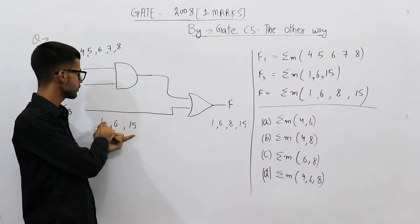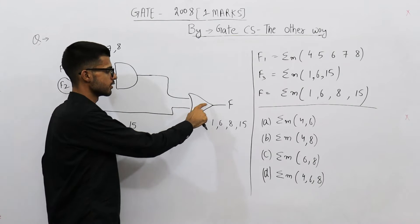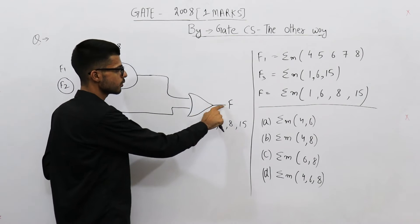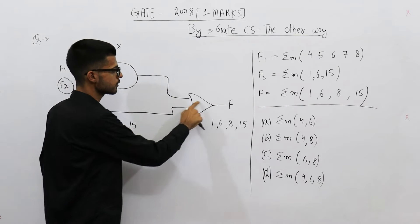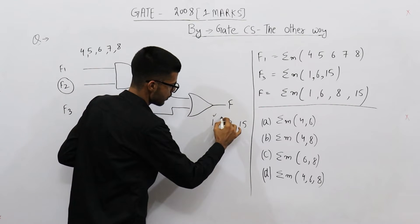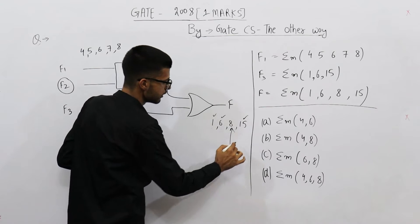Whenever any one of the inputs of an OR gate is 1, it will output high. So on 1, this input is high, so it will output high. On 6 also, it will output high. On 15 also, it will output high. So all of these are okay.